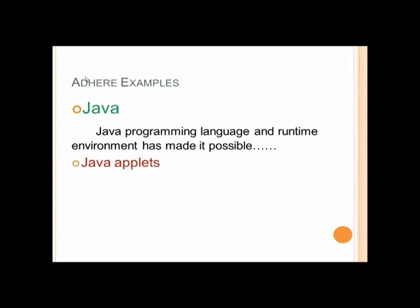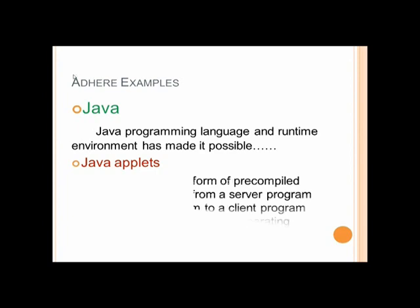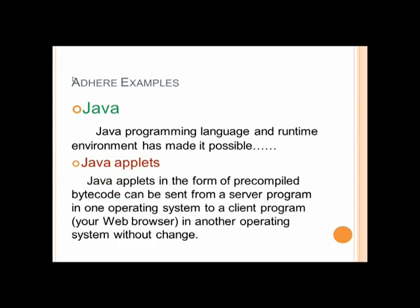Second example. Java applets. Java applets in the form of pre-compiled bytecode can be sent from the server to client, server in one operating system and client program in another operating system. But we can send Java applets between server and client without changing our applet program.